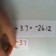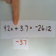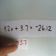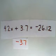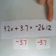If I subtract 3.7 from the left side of the equation, it's gone. Plus 3.7 minus 3.7. But whatever I do to the left, I have to do to the right. So I'll subtract 3.7 from the negative 26.12.